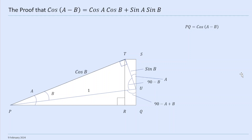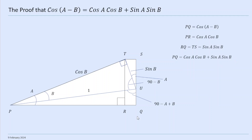Next we're going to prove that cos(a-b) = cos(a)cos(b) + sin(a)sin(b). PQ is cos(a-b) — that's the long bit here. PQ is made up of PR and RQ. We've got cos(b) right up here, then the angle a, so PR is cos(a)cos(b). RQ is the same as TS: we've got sin(b) here and an angle a, so TS = sin(a)sin(b). So PQ = cos(a)cos(b) plus sin(a)sin(b). That's the proof.